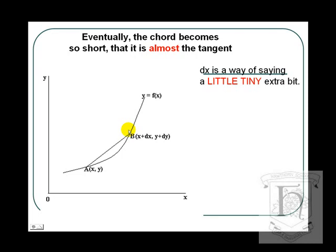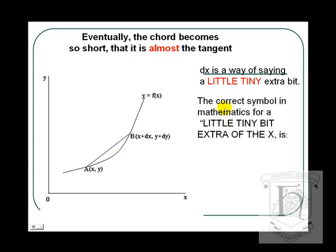If we make two points become closer and closer together on the curve, then we get a chord which becomes closer and closer to the tangent. In mathematics, δX is a notation for standing for a little tiny bit of X. The correct symbol is delta. Delta X means a small increment in the X direction.